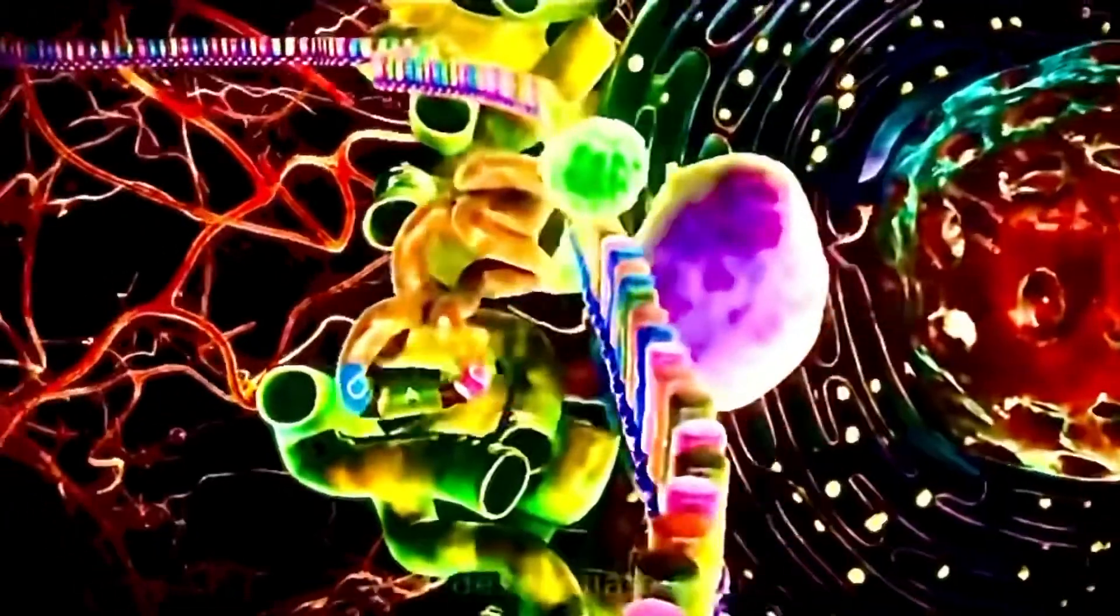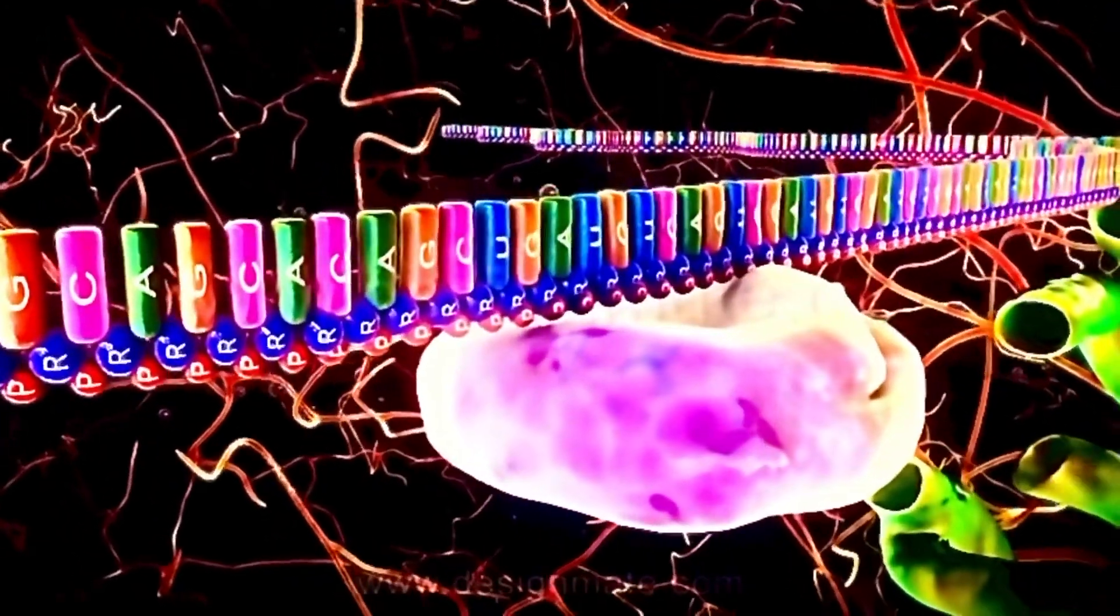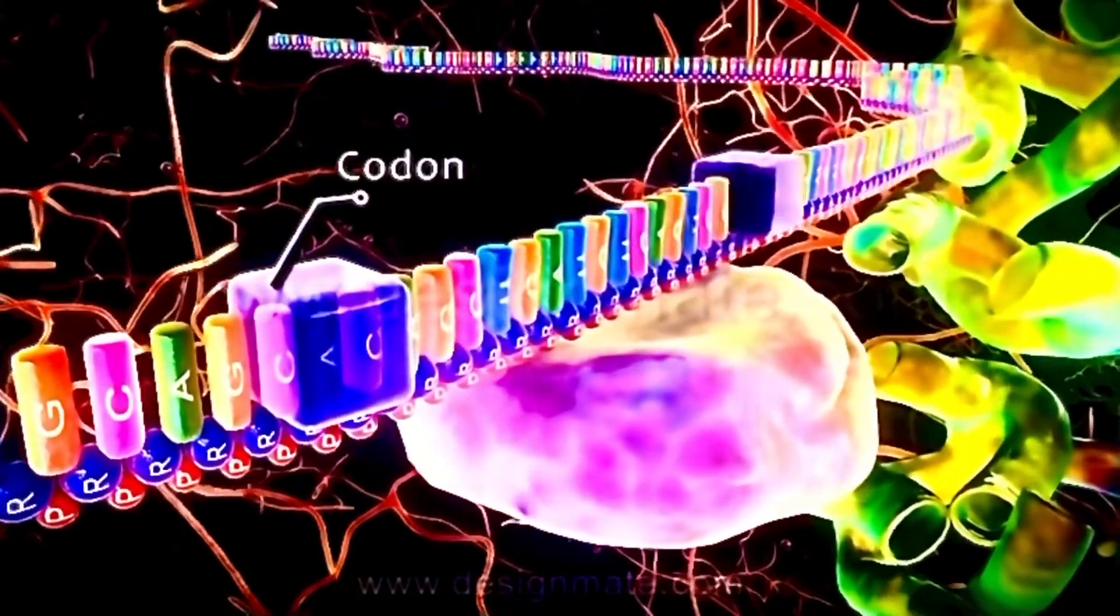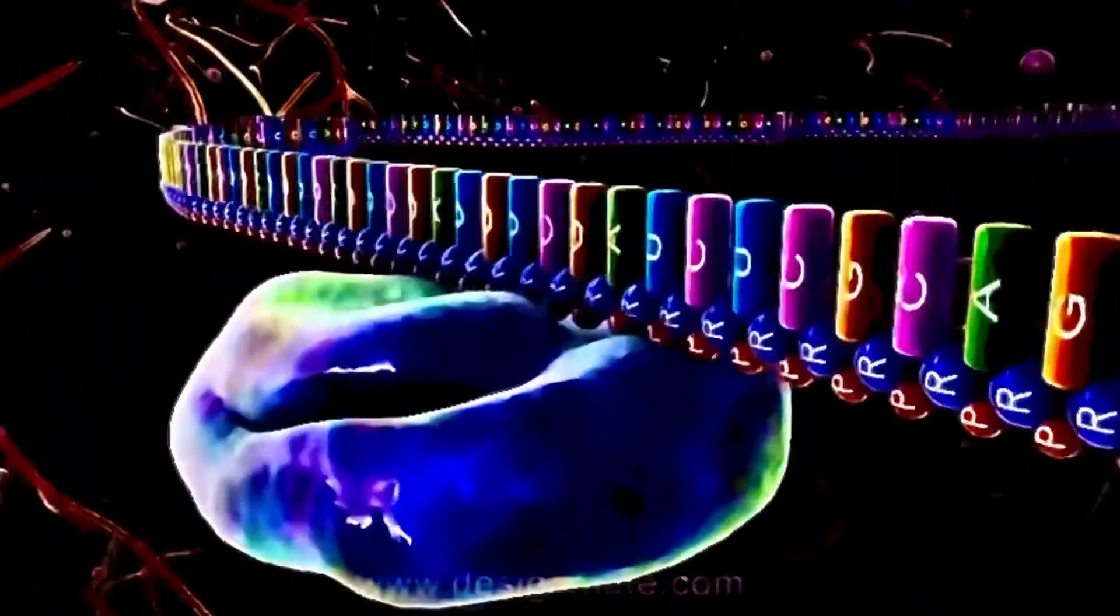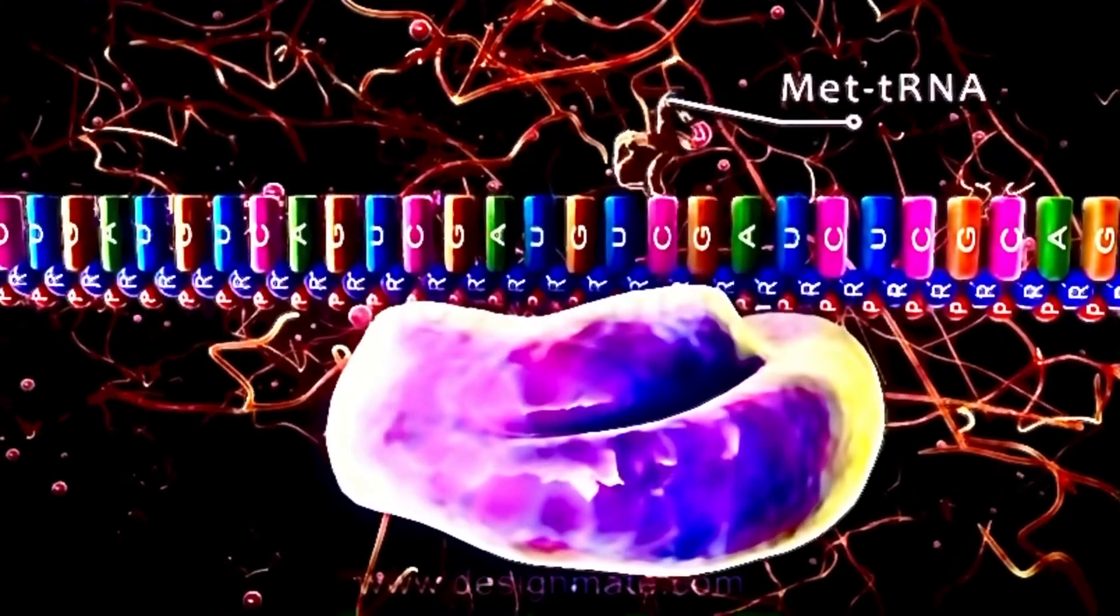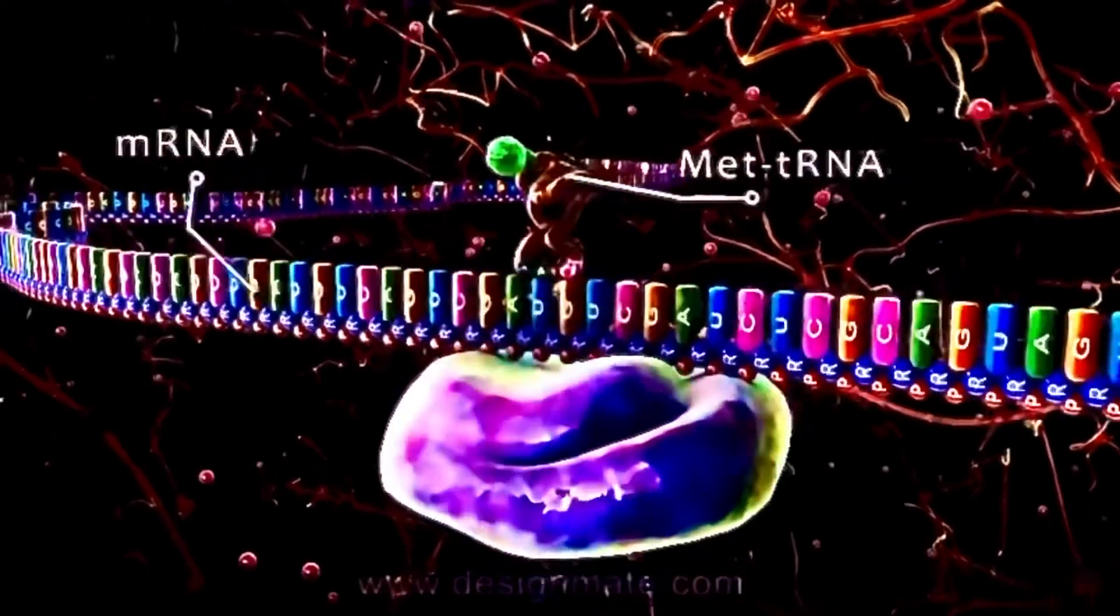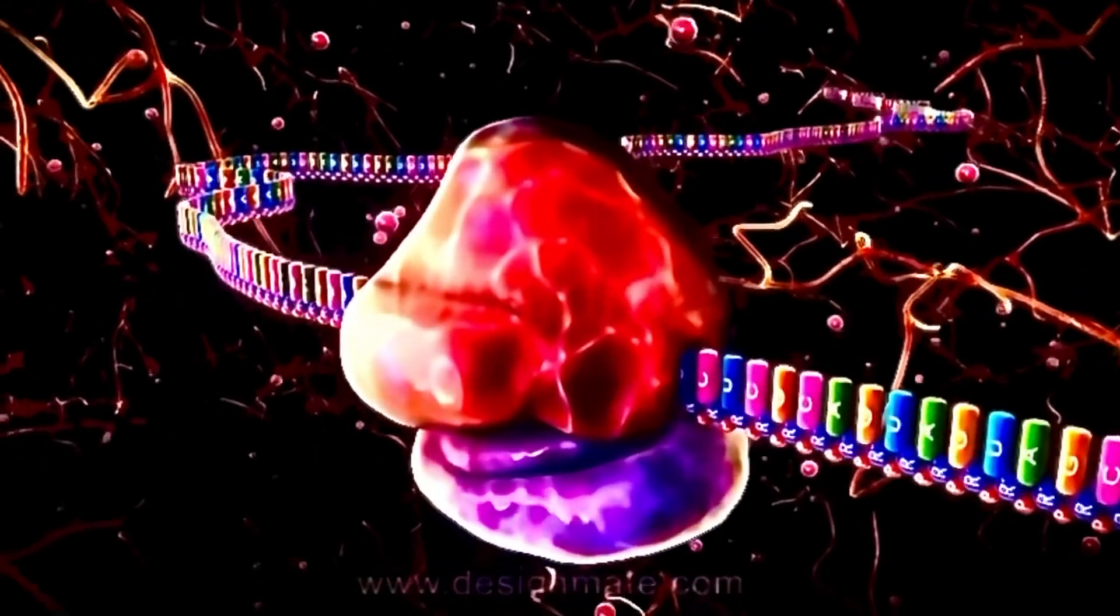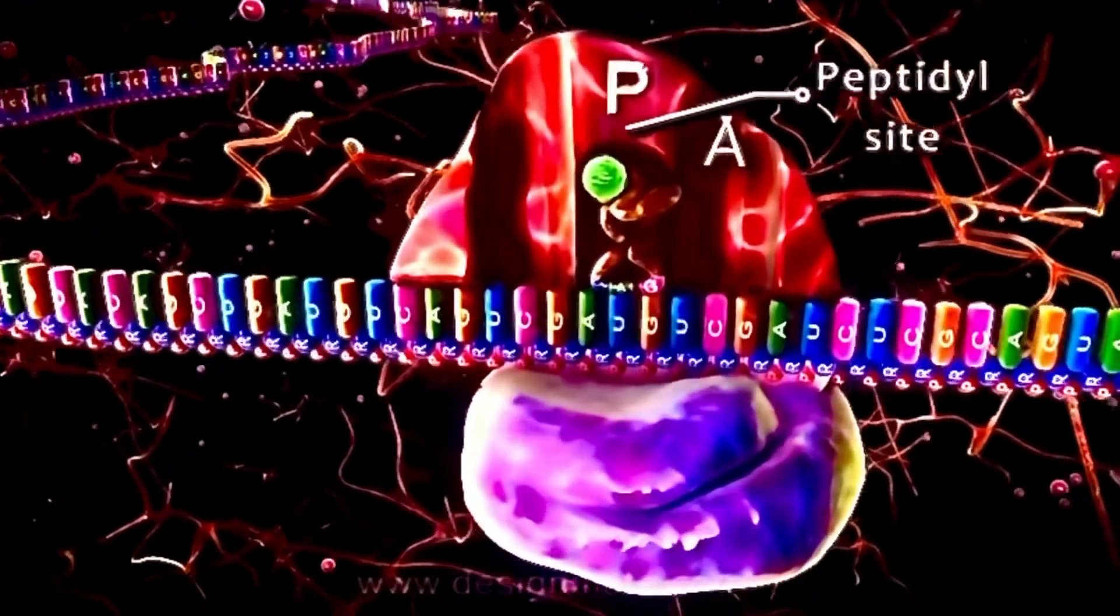During the initiation stage, a small subunit of ribosome binds to the mRNA strand. The mRNA strand is made up of codons, which are sequences of three bases. Then the ribosome subunit moves along the mRNA in five prime to three prime direction until it recognizes the AUG codon, or the initiation codon. At this point, met-tRNA, possessing the anticodon UAC, pairs up with the AUG codon of the mRNA. Then a large subunit of ribosome combines with a small ribosomal subunit. The large subunit shows three sites: the acceptor site or the A site, the peptidyl site or the P site, and the exit site or the E site. This whole unit forms the initiation complex.